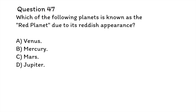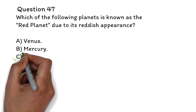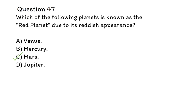The correct answer is C, Mars. Mars is commonly referred to as the red planet because of its distinct reddish hue. This coloration is due to the presence of iron oxide, or rust, on its surface. It's important you know some basic information about planets — like what planet has a ring, and what planets are closest to Earth.